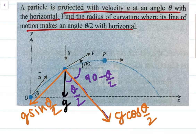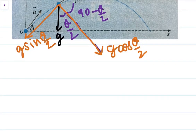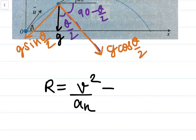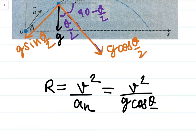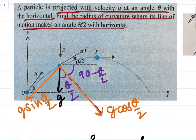We only need the normal component for the radius of curvature. So radius of curvature is equal to V squared by aₙ, which is V squared by G cos(θ/2). But the problem is that here V is a variable — we have only been given velocity U in the question, but no problem, we can find velocity V in terms of U.